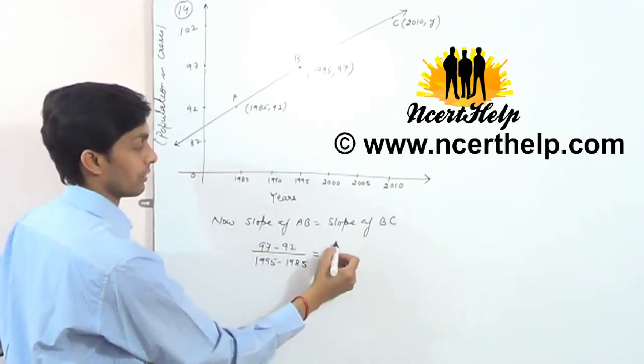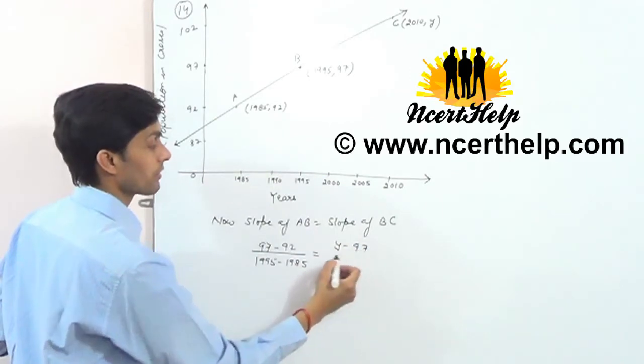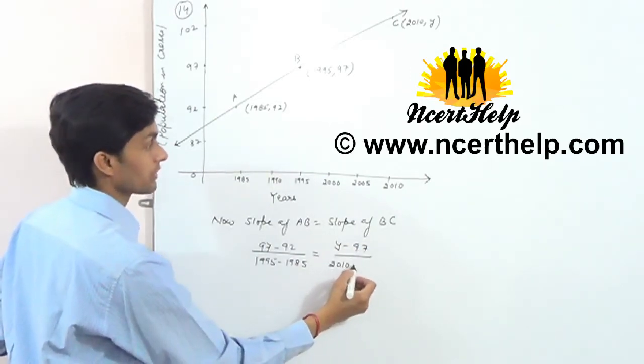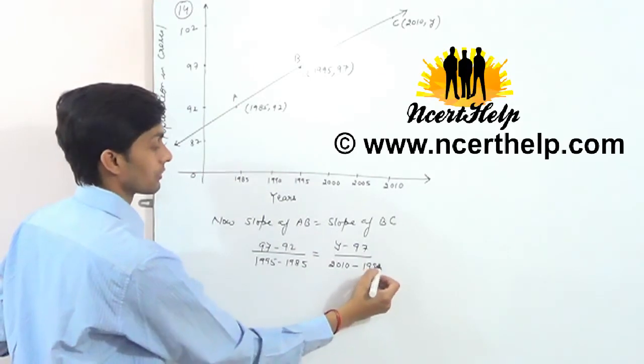Slope of BC? Y minus 97, 2010 minus 1995.